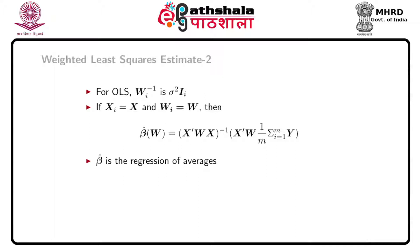Further, if we assume the data design is balanced — meaning equal number of observations per person — and complete, meaning no missing observations, then Xᵢ = X and Wᵢ = W for all i. Plugging X and W in place of Xᵢ and Wᵢ, we get β̂(W) = (XᵀWX)⁻¹ XᵀW ȳ, where ȳ = (1/M) Σᵢ yᵢ is the mean. This means that for a balanced and complete design, weighted least squares corresponds to the regression of averages. Replacing W by I again gives the ordinary least squares estimate.